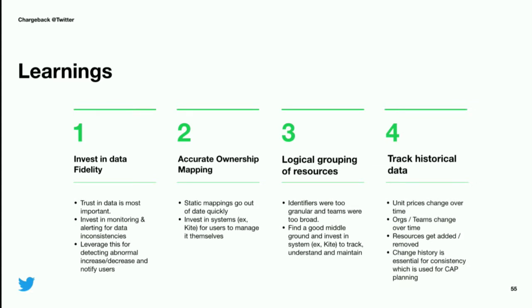Everything changes. As mentioned earlier, TCO evolves over time to account for depreciation. Projects and identifiers can be handed off to other teams as team priorities change. In order to track these changes, we customized the entity model to capture the change history of resources using time-varying dimensions.